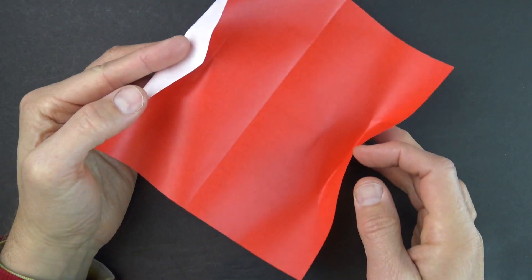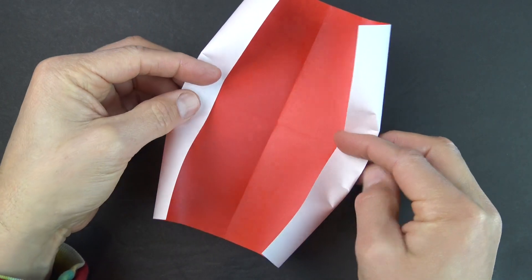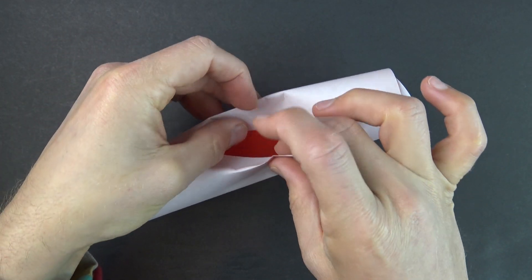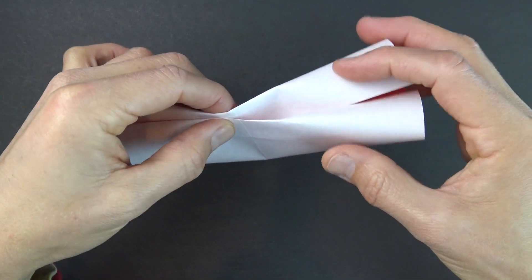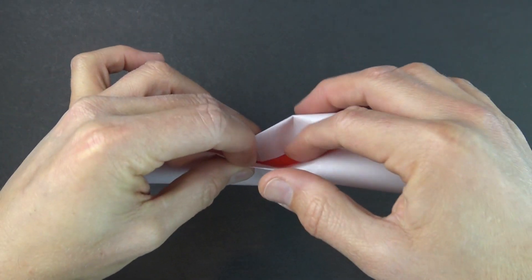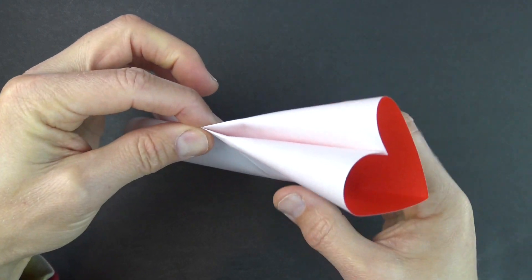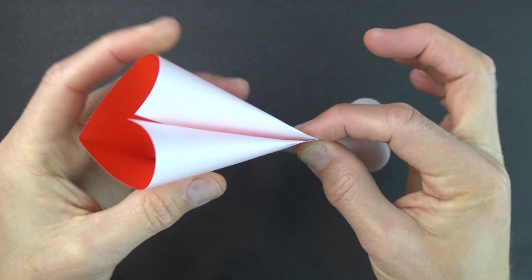Now make both of those folds at the same time, and fold in half so that these two points come together. So it's like that. So there's one heart, and there's another.